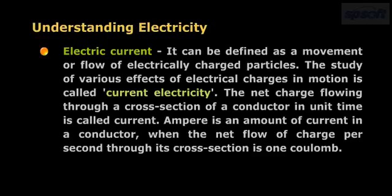The net charge flowing through a cross-section of a conductor in unit time is called current. Ampere is an amount of current in a conductor when the net flow of charge per second through its cross-section is 1 coulomb.